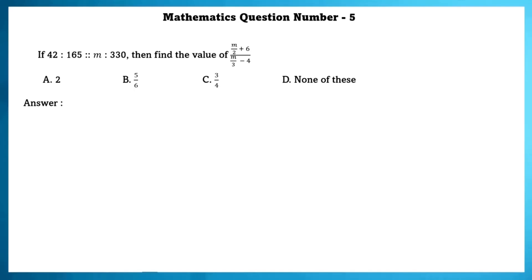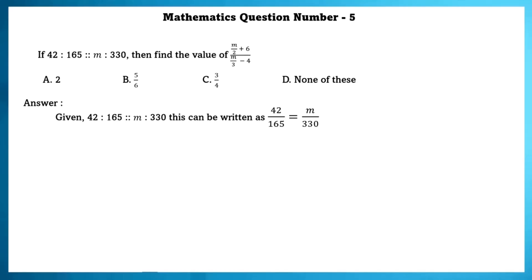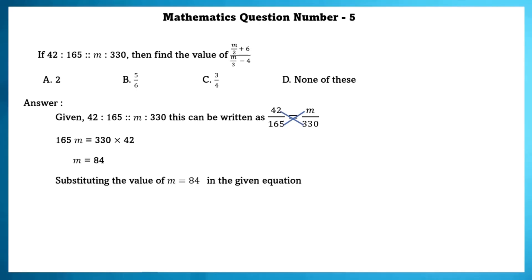Mathematics question number 5. If 42 is to 165 is in proportion with M is to 330, then find the value of M by 2 plus 6 by M by 3 minus 4. Given 42 by 165 equals M by 330, we find M equals 84. Substituting M in the given equation, the answer is 48 by 24, which reduces to 2.